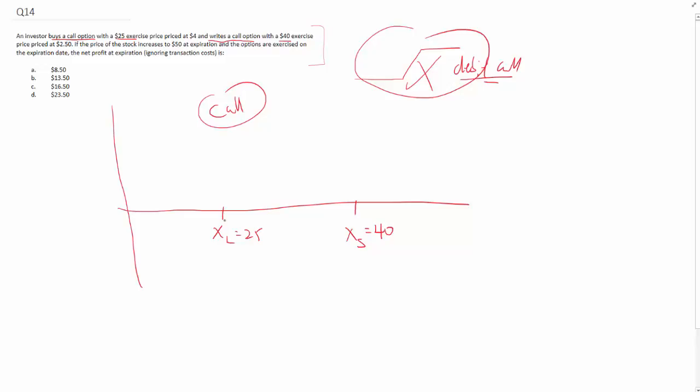Essentially what it means here is if your share price is more than $25, your long call basically is in the money. Once it exceeds $40, you will be starting to go in a loss position because essentially your short call is going to lose money. So the share price right now is $50 - what is the overall position?